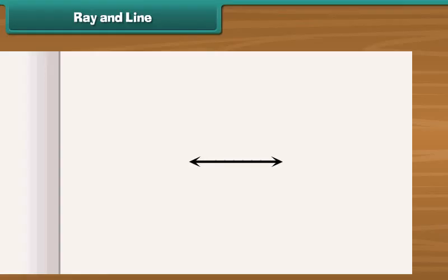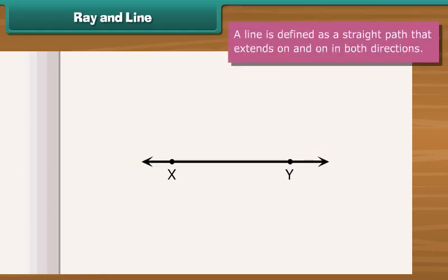What if a straight path extends on and on in both directions? This becomes a line. For example, line XY. Thus, a line is defined as a straight path that extends on and on in both the directions.